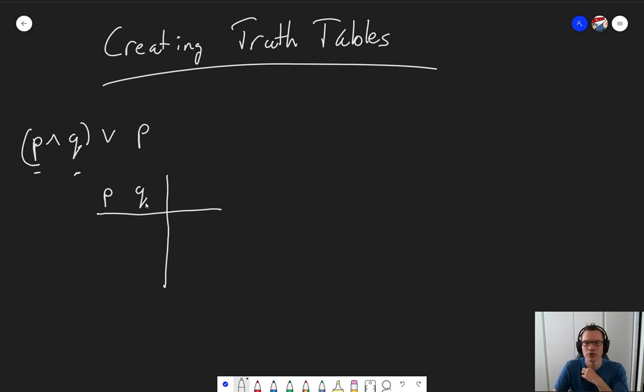So the first thing we do in our table is we write down all the possible values that P and Q can have. Now, P and Q are both propositions, meaning they are either true or false. No other option. So that means we have two options for Q and we have two options for P. 2 times 2, that's four options in total.